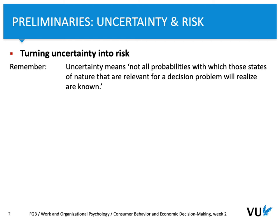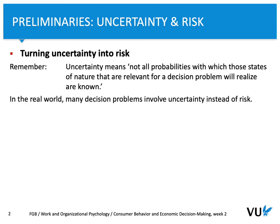The difference between both of them is that uncertainty means that not all probabilities are known. In a specific game, we can take into account probabilities related to different events, related to what nature can provide. In real-world, many decision problems involve uncertainty instead of risk. Risk is when all outcomes have defined probabilities.